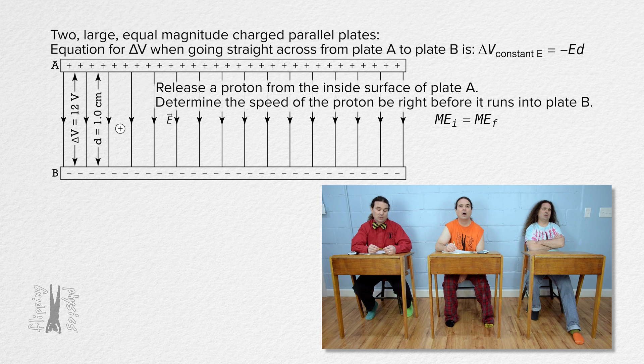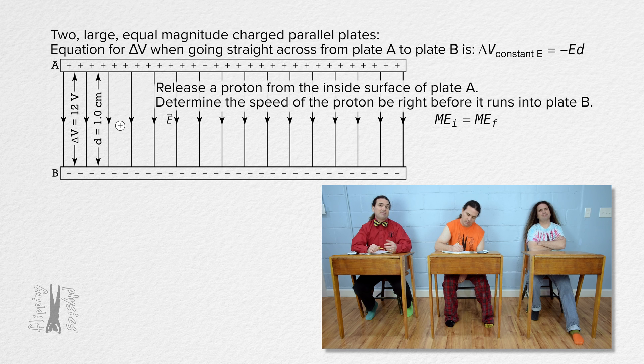But how do we know mechanical energy is conserved in this example? There is no work done on the proton by a force applied or by a force of friction, so mechanical energy is conserved. So, mechanical energy initial equals mechanical energy final.